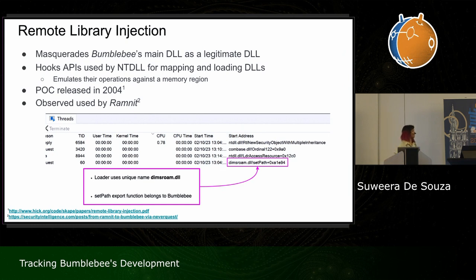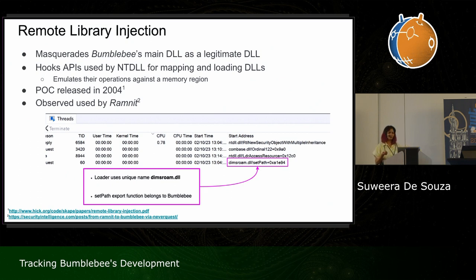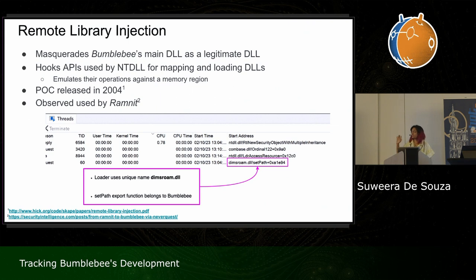Even more interesting: one of Ramnit's loaders matches exactly that of Bumblebee's loader when used in conjunction with PowerSploit. Given that Ramnit was also seen using PowerSploit — as highlighted in a ClearFi talk — it's not to say the developers necessarily knew of this technique or were the same group, but there is definitely a lot of borrowed code here.